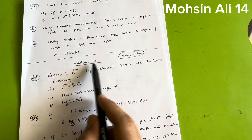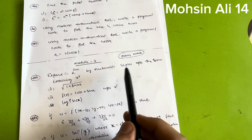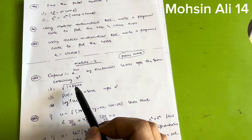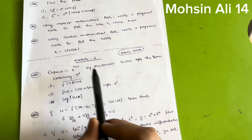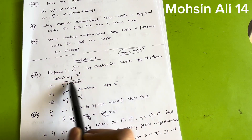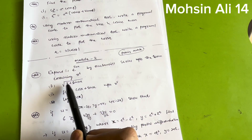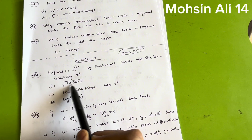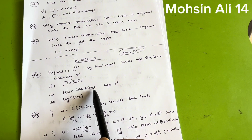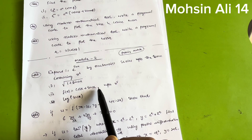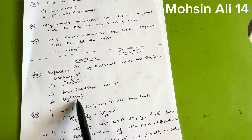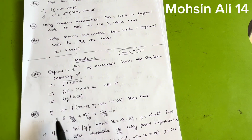For Module two — another passing module — you have to focus on the Maclaurin series only. Four most frequently asked questions are: expand e^(sinx) up to the term containing x⁶; expand √(1 + sin2x); expand f(x) = cosx + sinx up to the term x⁵; and expand log(secx) using Maclaurin series.